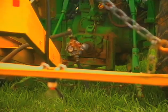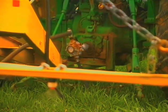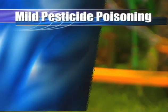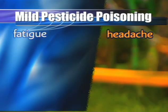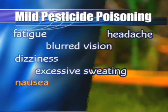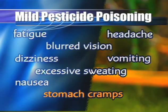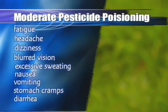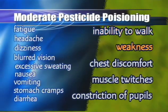Know the signs and symptoms of pesticide poisoning so that first aid can be administered immediately. A person with mild pesticide poisoning will exhibit signs of fatigue, headache, dizziness, blurred vision, excessive sweating, nausea, vomiting, stomach cramps, and diarrhea. Moderate pesticide poisoning will include all of these symptoms plus the inability to walk, weakness, chest discomfort, muscle twitches, and constriction of pupils.